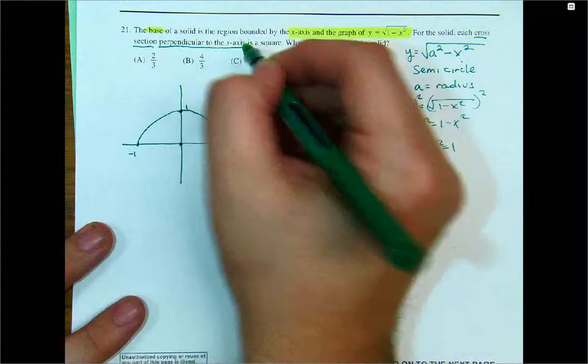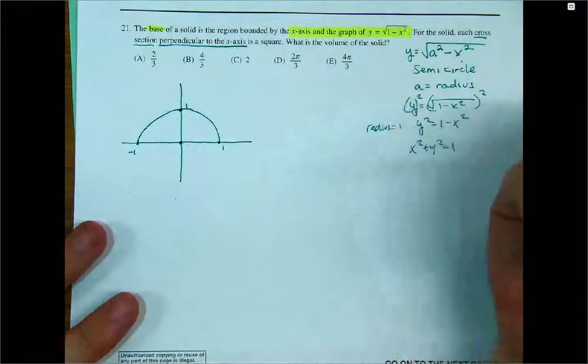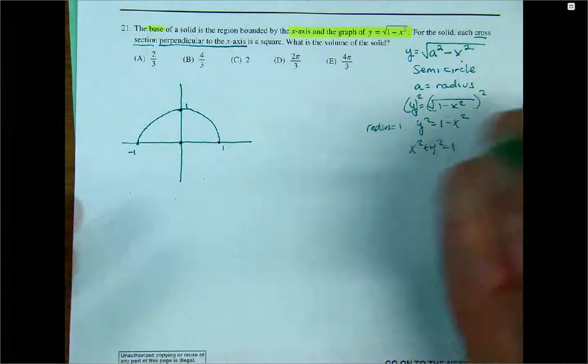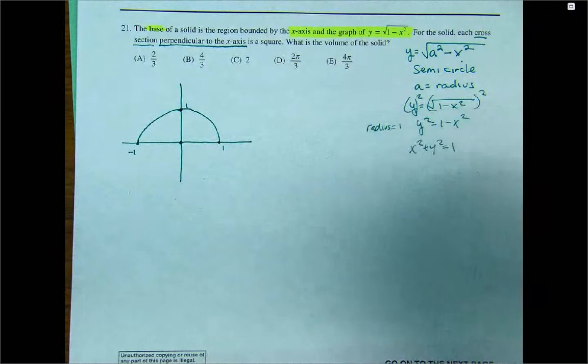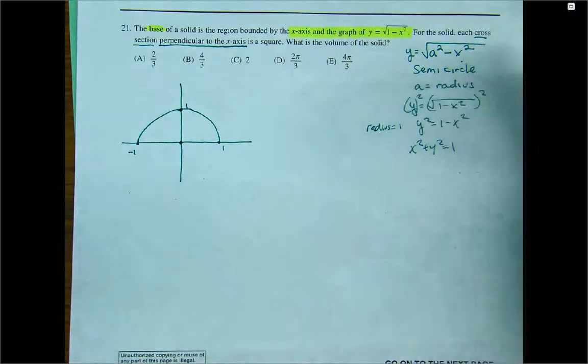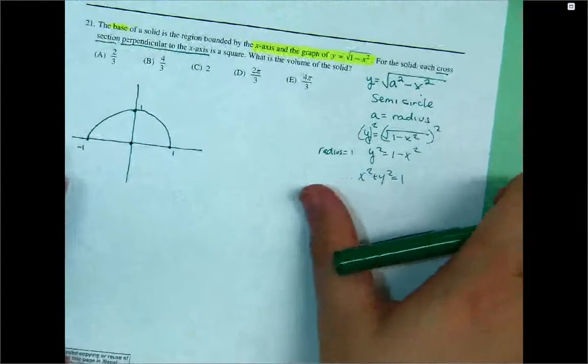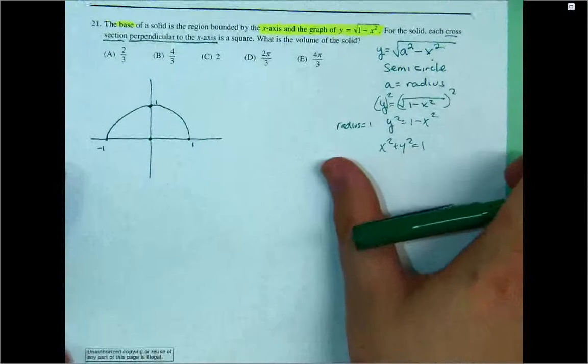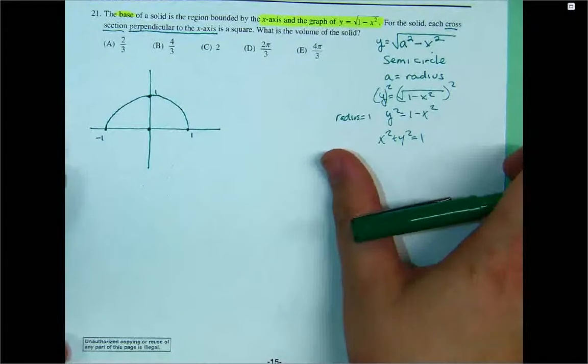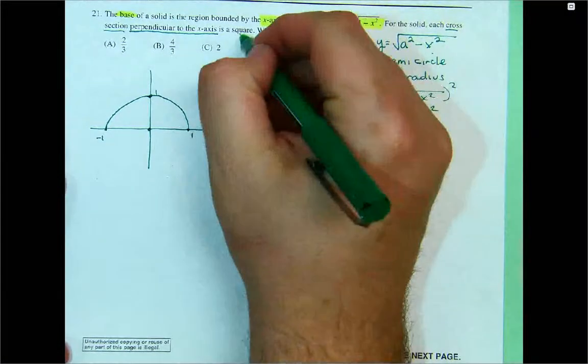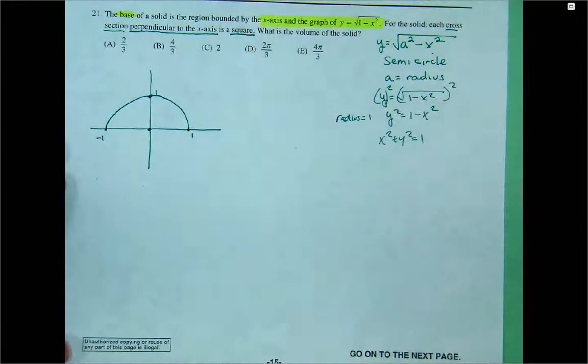And that cross-section is going to be perpendicular to one of the axes. It's either going to be perpendicular to the x-axis or to the y-axis. Chances are it's going to be the x-axis. But be prepared for anything. If it has to go with y, all you do is kind of flip this a little bit. Now, what's the shape of the cross-section?